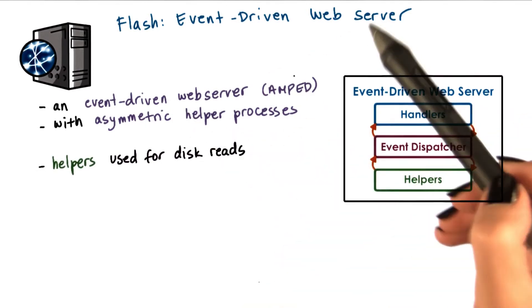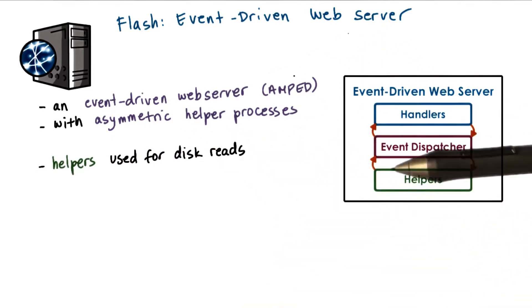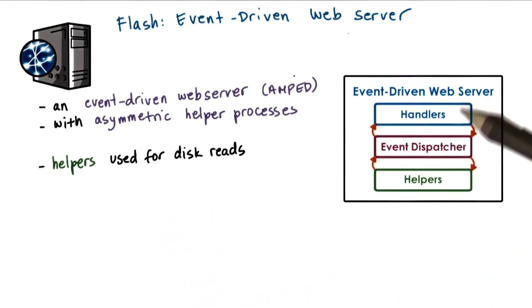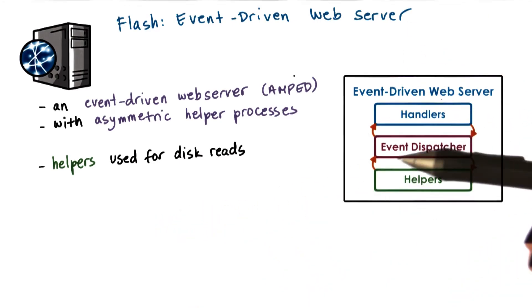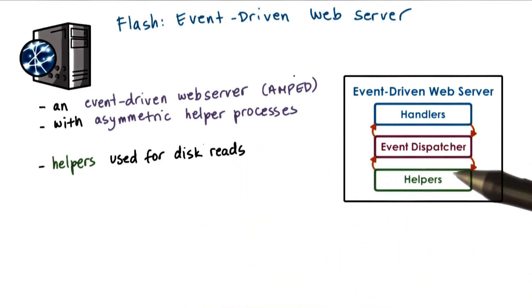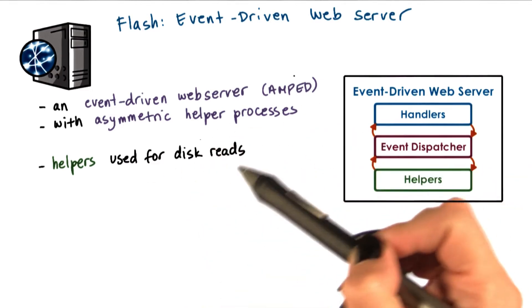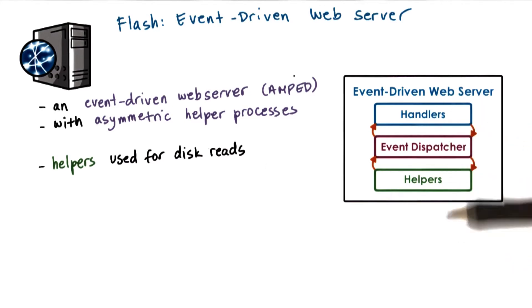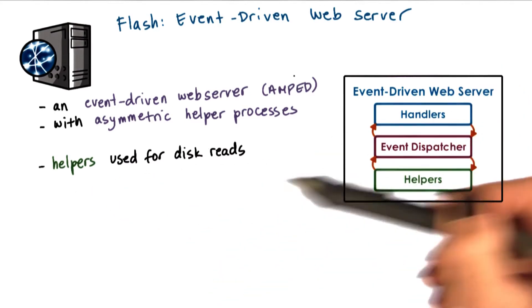Given that we're talking about a web server, and this is old-fashioned web 1.0 technology, where the web server just returns static files, the blocking IO operations happening in the system are disk reads. The server reads files that clients request.